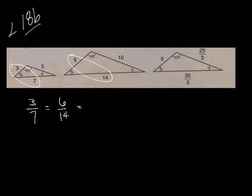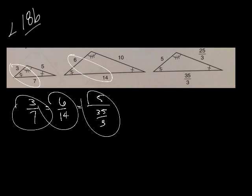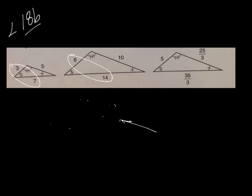If I write it as 5 over 35 over 3, this, this, and this equal the same fraction, even though this one might take a little bit of work to get it that way. But that's what we're talking about when we're talking about similar triangles, is that the sides are all going to be similar in ratio.